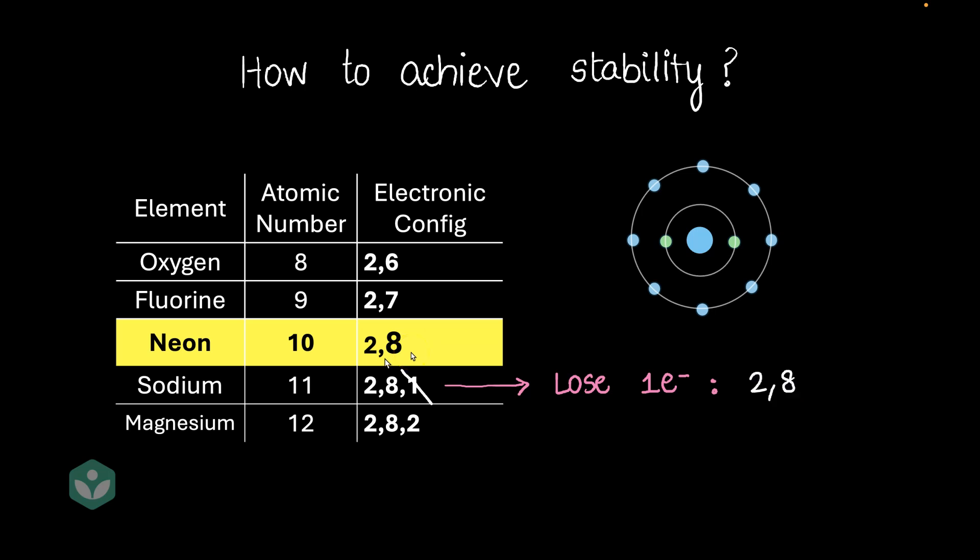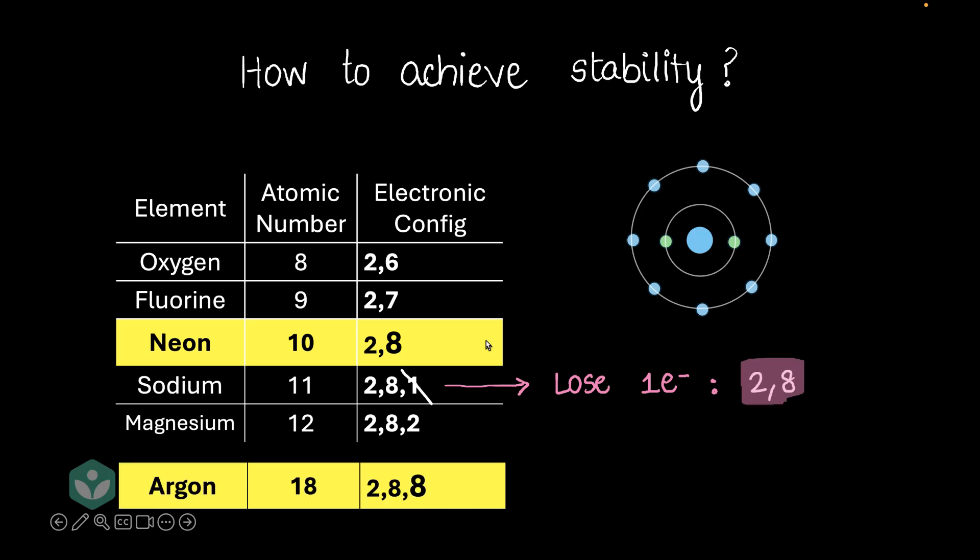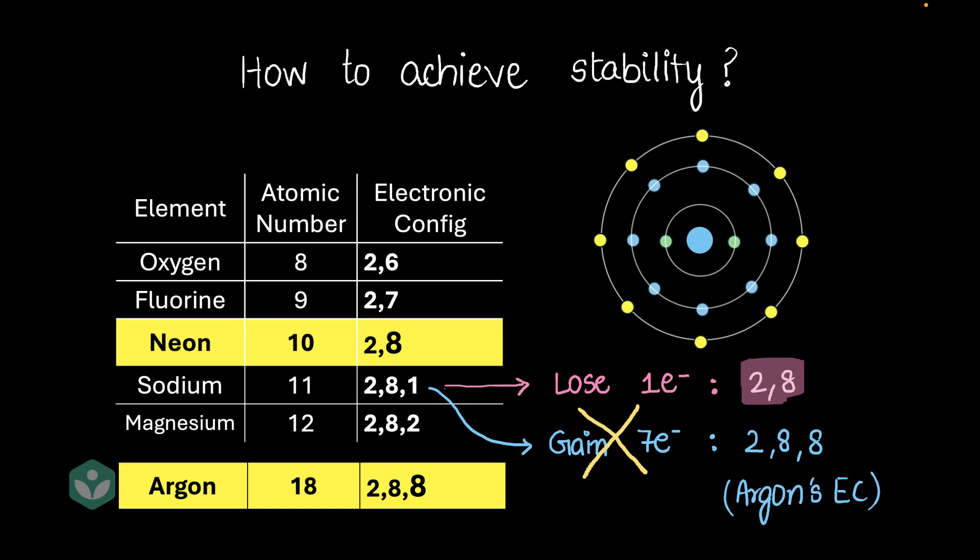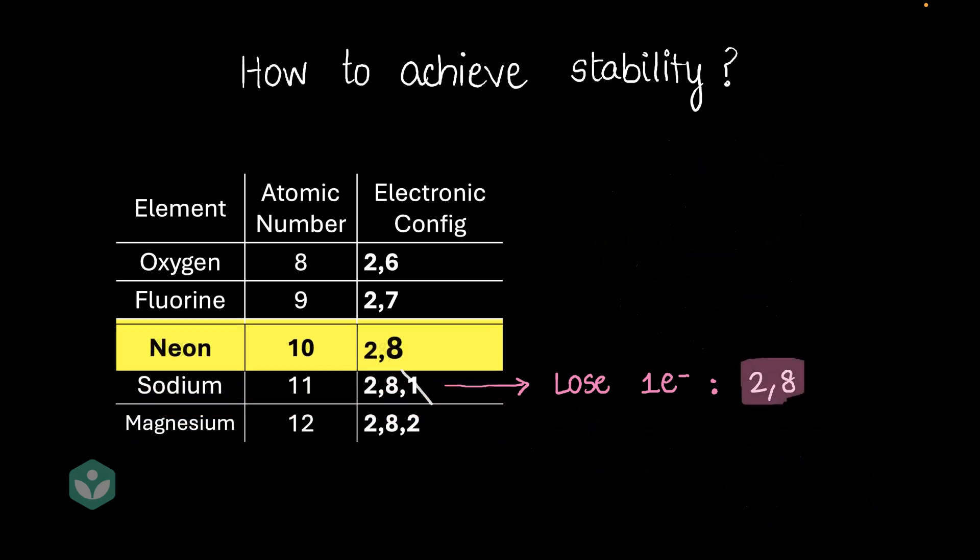Now you might say, hey, wait a minute, why did sodium want to become like neon? Why did it not try to become like argon? If it became like argon, that's a noble gas too, it would become stable, right? So why did it not try to gain 7 electrons to become like argon? Interesting question, isn't it? The issue is that gaining 7 electrons is harder than losing 1 electron. Losing 1 electron is a small change to the atom, whereas gaining 7 electrons is a huge change to the atom. And so it's just not possible to gain 7 electrons very easily. It's way easier to lose 1 electron, and so sodium prefers to do that. And so the argon thing really doesn't work.